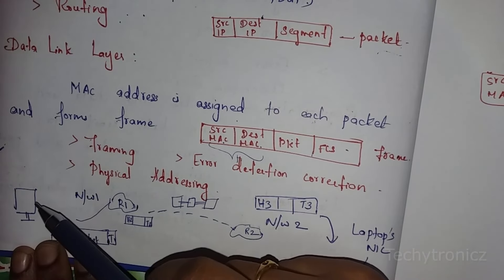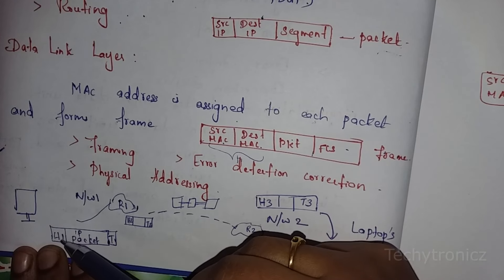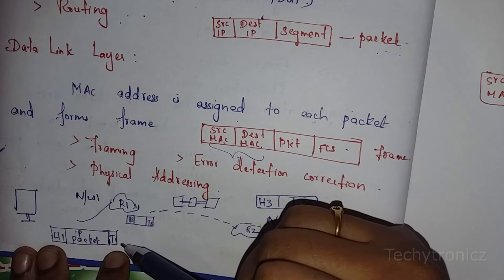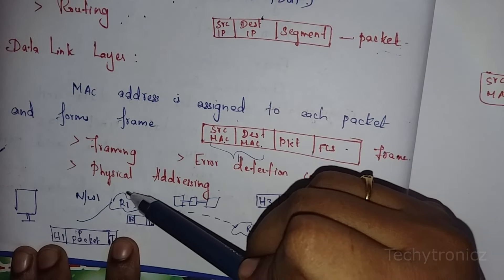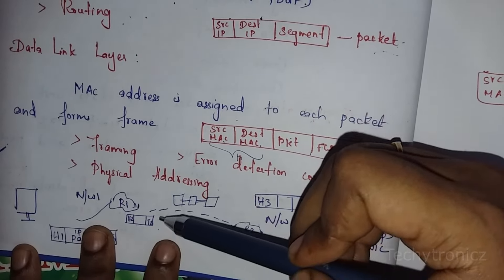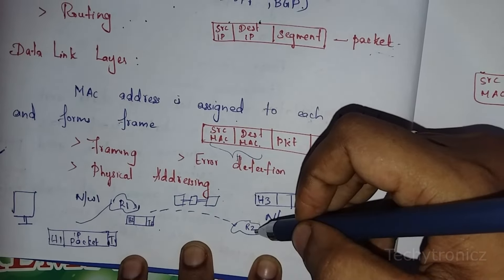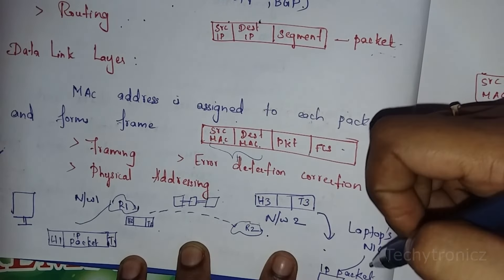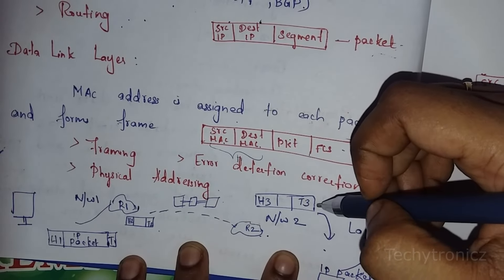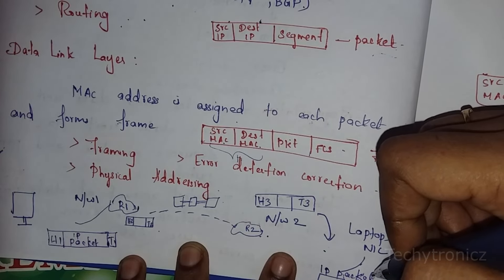When data is transmitted, the data link layer adds a header and trailer to the IP packet from the network layer, forming a frame. This frame connects to a network and then goes to a router. The router adds its own header and trailer, and through the next network — whether wireless, satellite, or other — it forwards to the correct receiver. The router sends the frame to the specific receiver side with the correct IP packet.